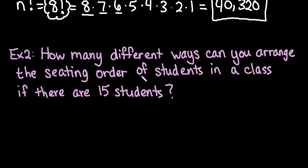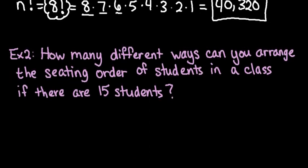The second one: In how many different ways can you arrange the seating order of students in a class if there are 15 students? Again, because we're dealing with all students, we would do n factorial, so we would just do 15 factorial.